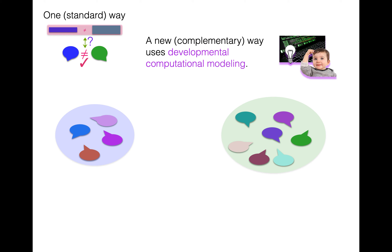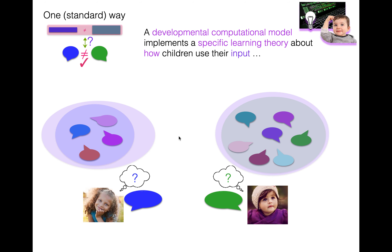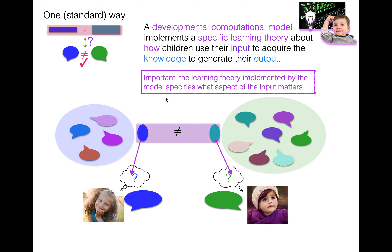What I want to talk about today is a new complementary way to find these developmentally meaningful differences, using a developmental computational model. A developmental computational model implements a specific learning theory — it makes concrete a specific learning theory about how children use their input to acquire the knowledge they use to generate their output. It's a causal story about how input leads to the knowledge that generates the output. This means the learning theory specifies what aspect of the input matters and how exactly it matters, so we can target that part for intervention if needed.